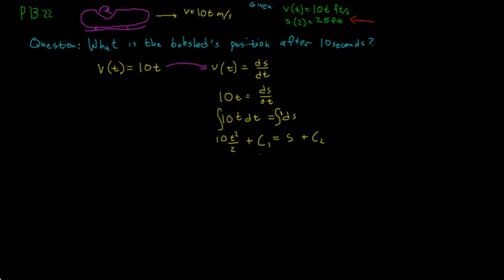Now if we move the c2 to the other side, we can get s as a function of t is equal to, and then we'll divide here by 2, so we get 5t squared plus c1 minus c2. Now you may be looking at this and say, oh, we have a given condition, but we have two unknowns down here. c1 minus c2, well, they're both constants, so the result of this is just going to be another constant. So we can just call that c. So we'll replace c1 minus c2 with c.